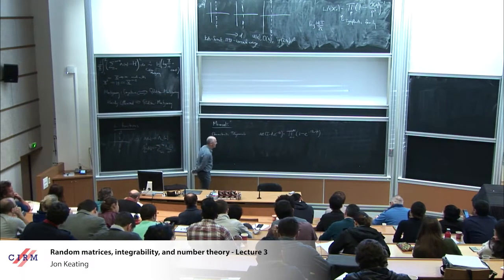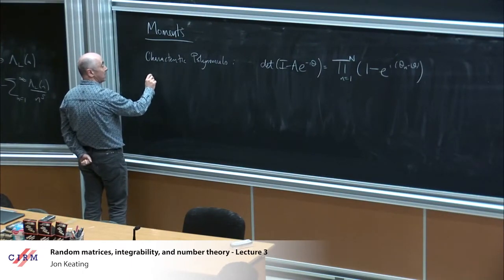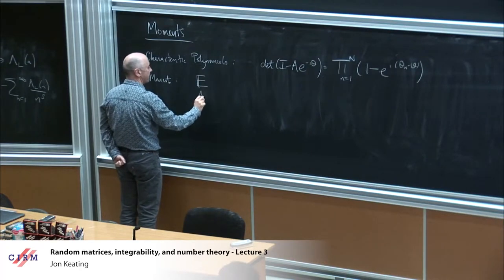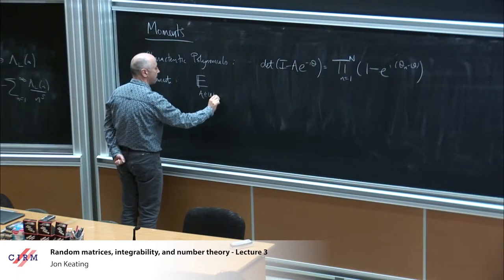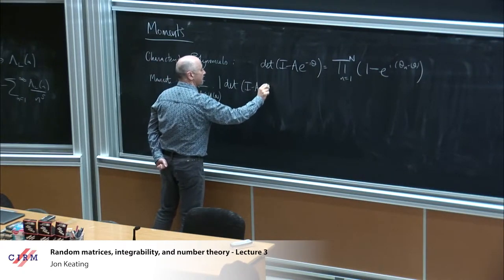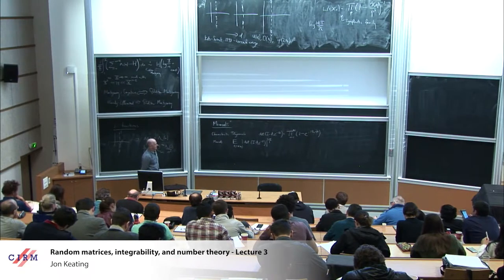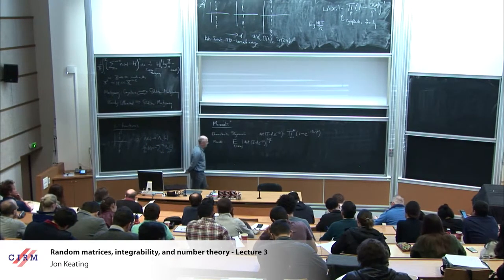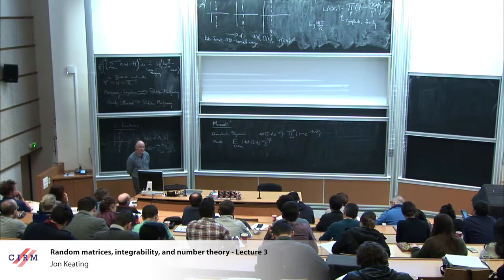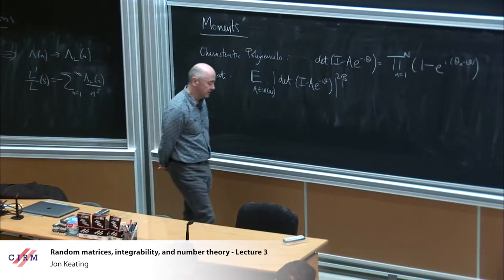Let's study its values. The problem is to consider the moments: take the average of the modulus of the determinant to some power 2β. In random matrix theory this is an interesting problem and it can be addressed in a number of ways — in particular using Fisher-Hartwig asymptotics. You can write these moments in terms of Toeplitz determinants, so the sorts of material from Estelle's and Alexander's lectures become important.